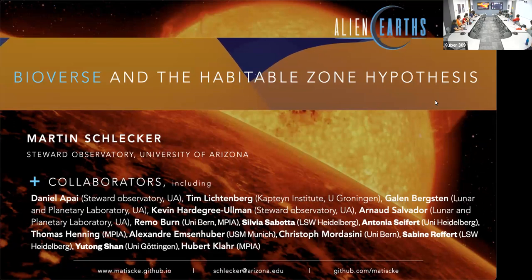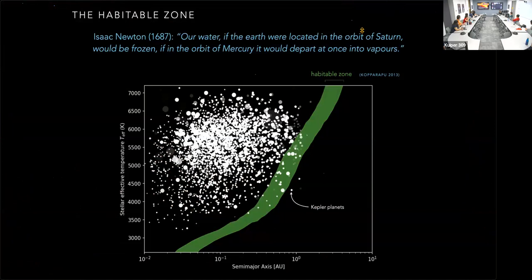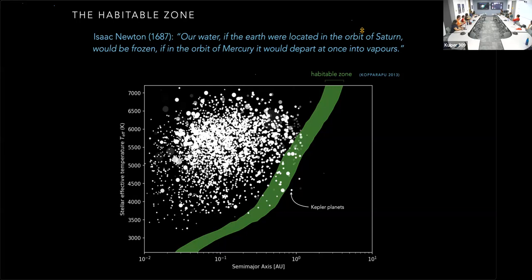So if my slides advance, I can show you something most of you might be familiar with. This is about the habitable zone—a very old concept. Isaac Newton in the 1600s referred to something that sounds a lot like our habitable zone concept: if the Earth were located in the orbit of Saturn, water would be frozen; if in the orbit of Mercury, it would depart at once into vapor. He even predicted the steam atmospheres we deal with when thinking about runaway greenhouse planets.